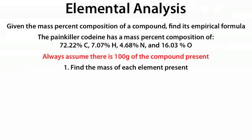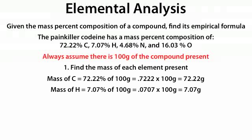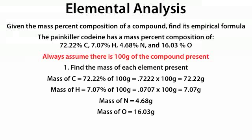Taking 72.22% of 100 grams gives 72.22 grams of carbon. Taking 7.07% of 100 grams gives 7.07 grams of hydrogen. Taking 4.68% of 100 grams gives 4.68 grams of nitrogen. And taking 16.03% of 100 grams gives 16.03 grams of oxygen.